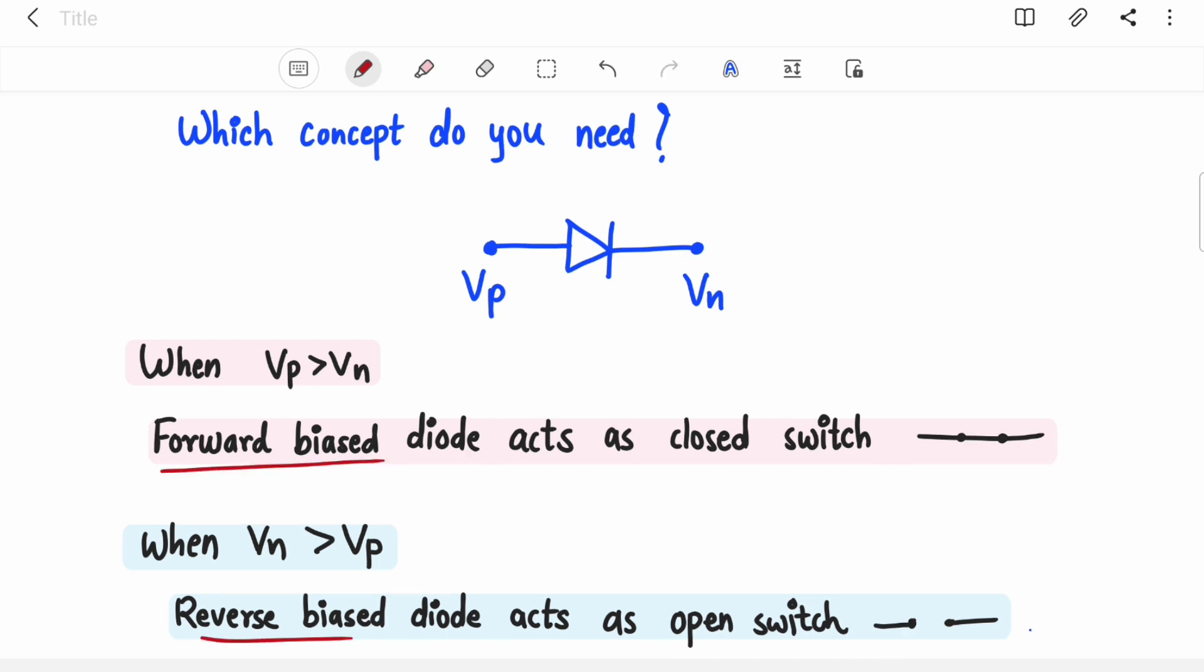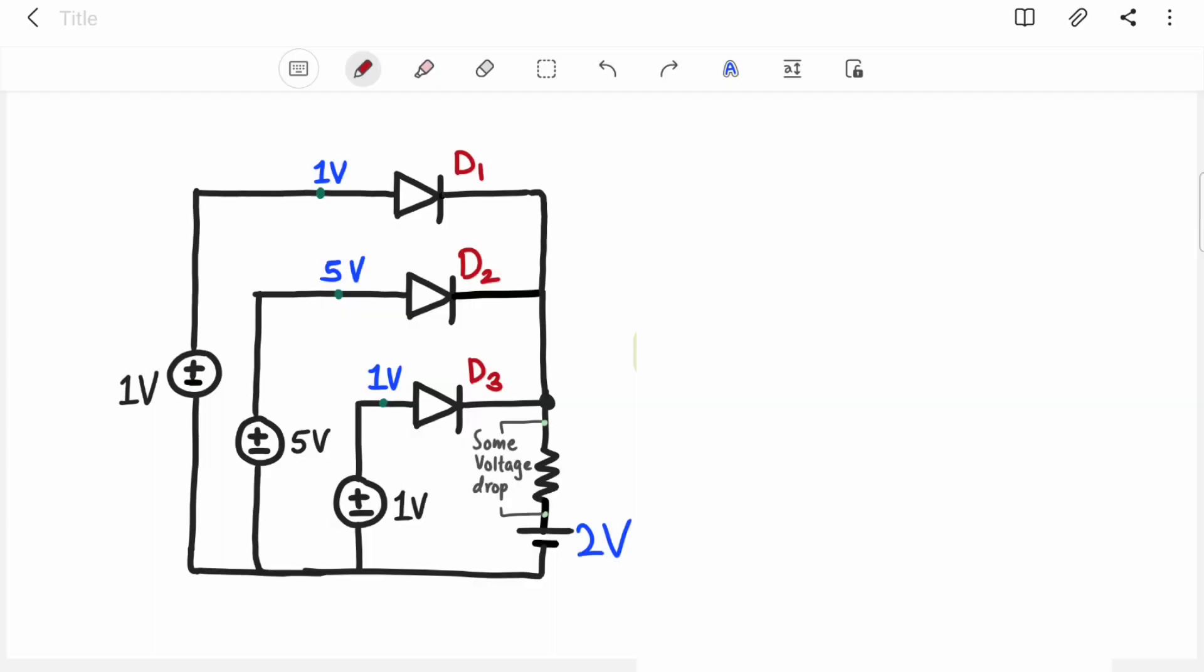Now let's take a look at diode 1, D1. Voltage at p terminal of this diode is 1 volt. Now at n terminal, this negative terminal, there is one battery connected which is of 2 volts and there is one small resistor. Now we do not know the value of this resistor. Now let's assume it is of very small value so the voltage drop across it will be very negligible.